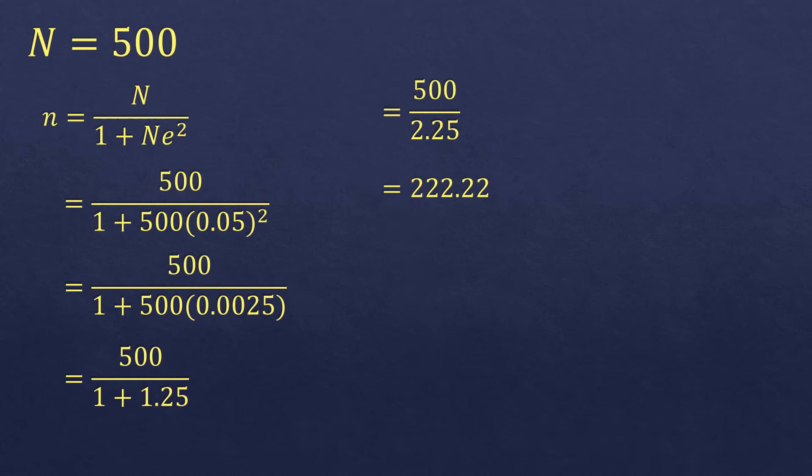So what are you going to do with this? Are you going to round up or round off or round down? So the rule for this, for Sloven's formula, Yamane's formula, is to just keep on rounding up. Because we should consider that 222 and so on represents a person. If you're just imagining the 0.2, it's like just a feet of a person.